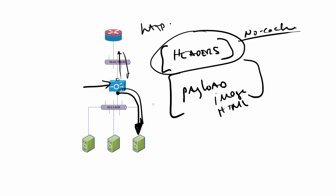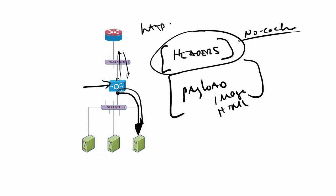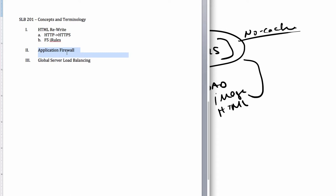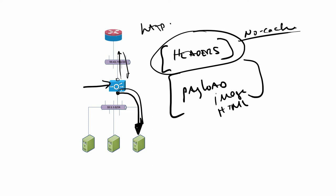The next topic is application firewall. This is something many advanced load balancers have built in — Ace had it, as well as F5 and others. It is a firewall, but it's different from a traditional firewall. A traditional firewall operates at layers 2 through 4 — you can block a protocol, block an IP address via an ACL, or drop or block ports.